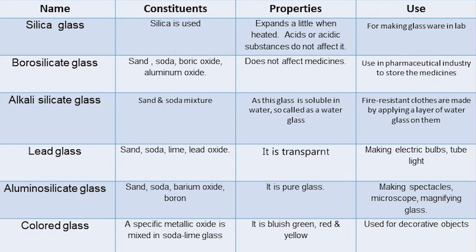Alkali silicate glass is soluble in water, so it is called water glass. Fire-resistant clothes are made by applying a layer of water glass on them. Lead glass: constituents are sand, soda, limestone and lead oxide; it is transparent; it is used in making electric bulbs and tube lights.